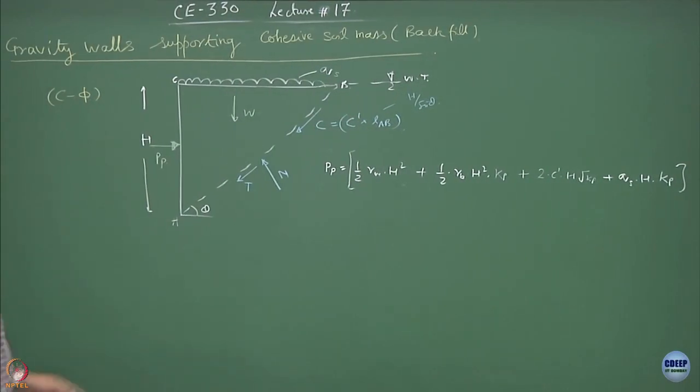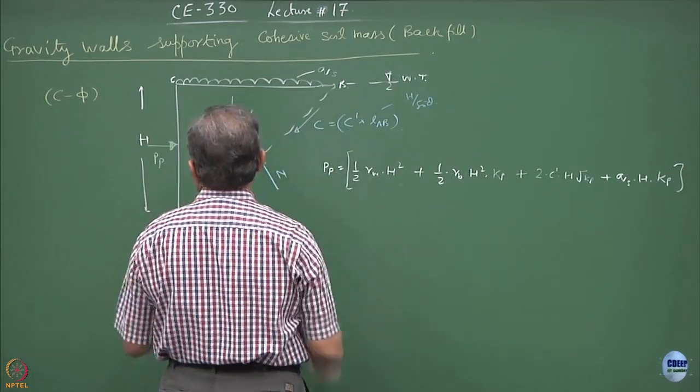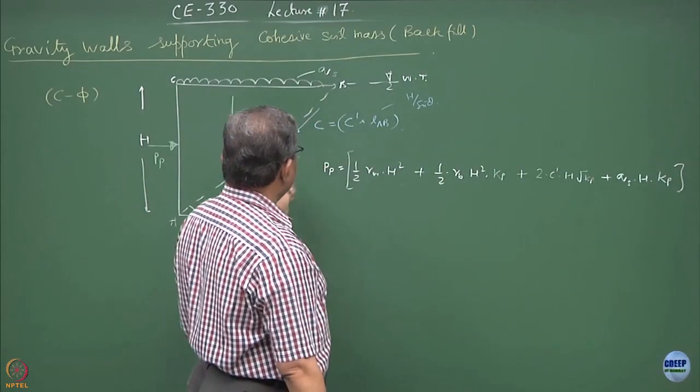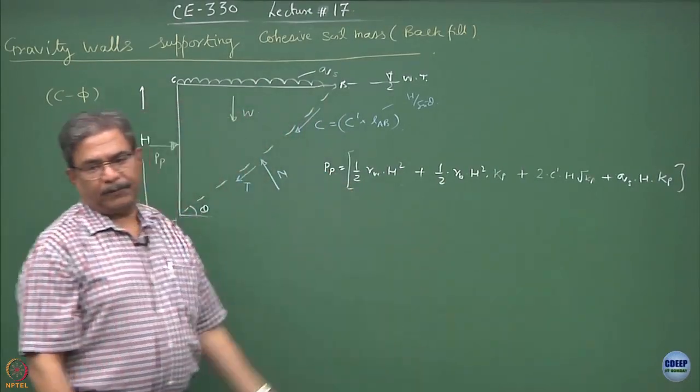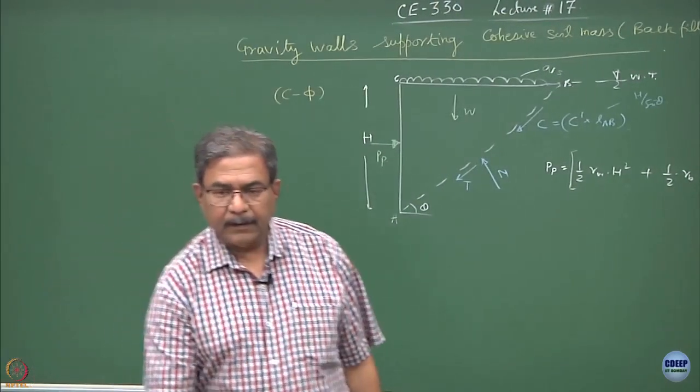And what else is remaining? The surcharge. So, the surcharge will be in the form of qs into h into kp. Try to solve this problem or this situation by using trial wedge analysis. You know all the forces which are acting on the system and then compute this.